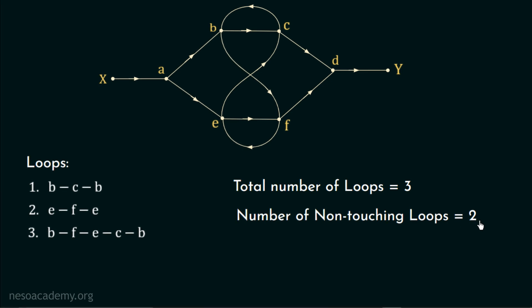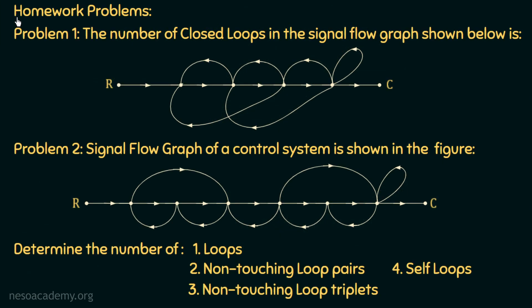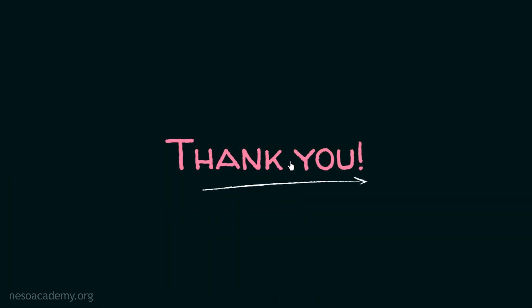We have now counted the number of forward paths and the number of loops in this signal flow graph. Please revise this example, and then try the homework problems: identify the number of loops in the given signal flow graphs and let me know in the comment section. Thank you for watching this lecture — see you in the next one.